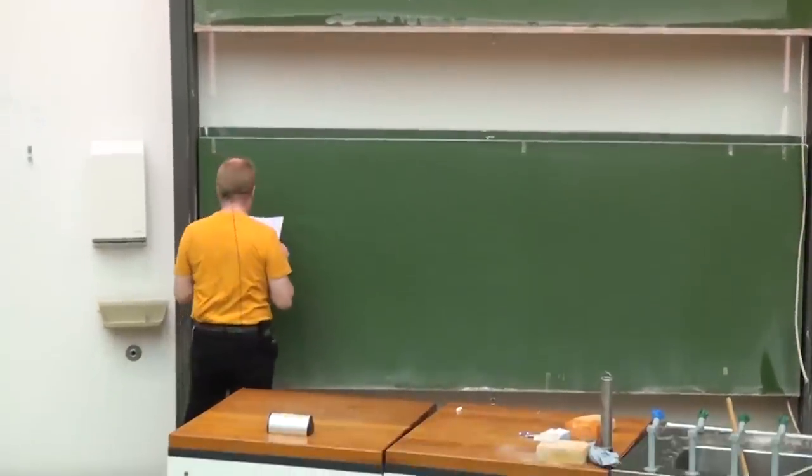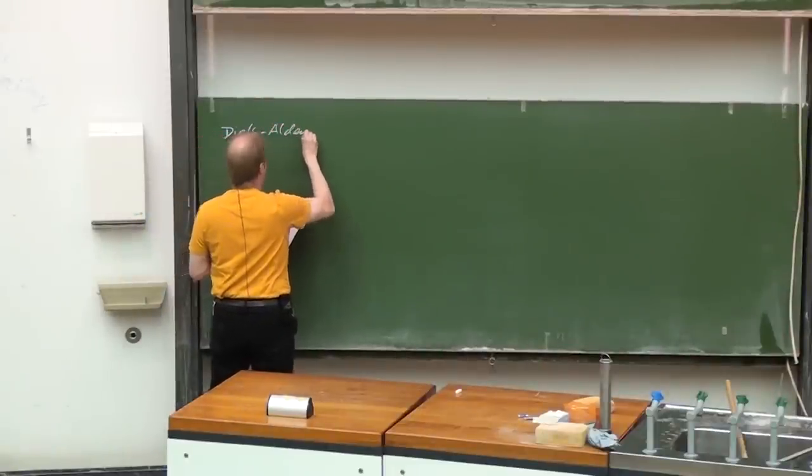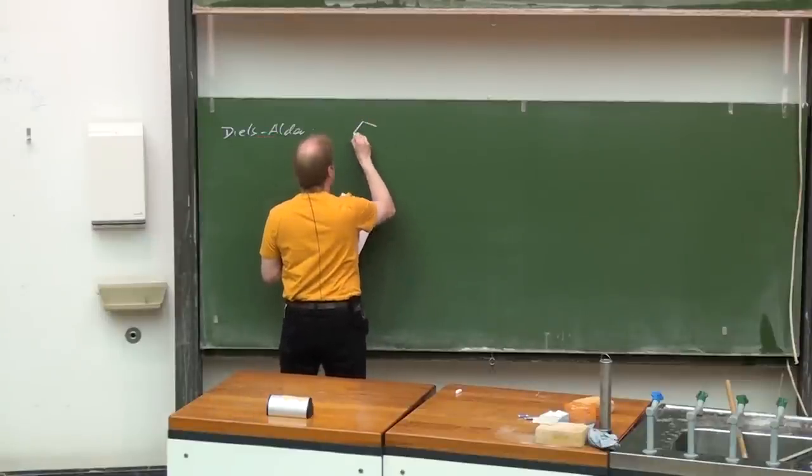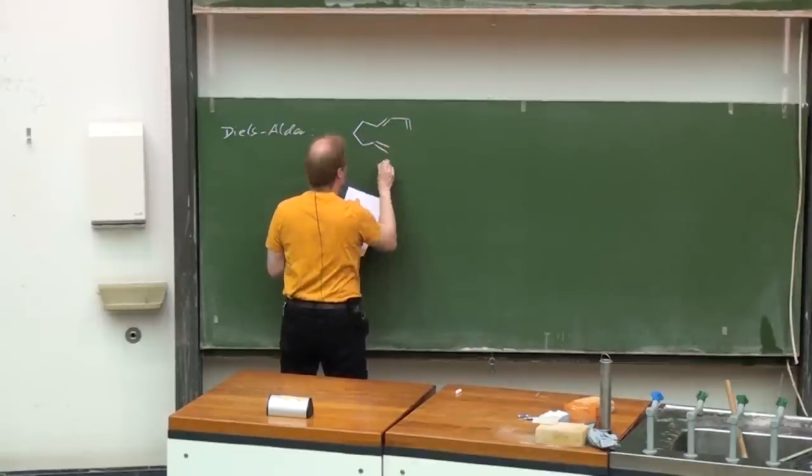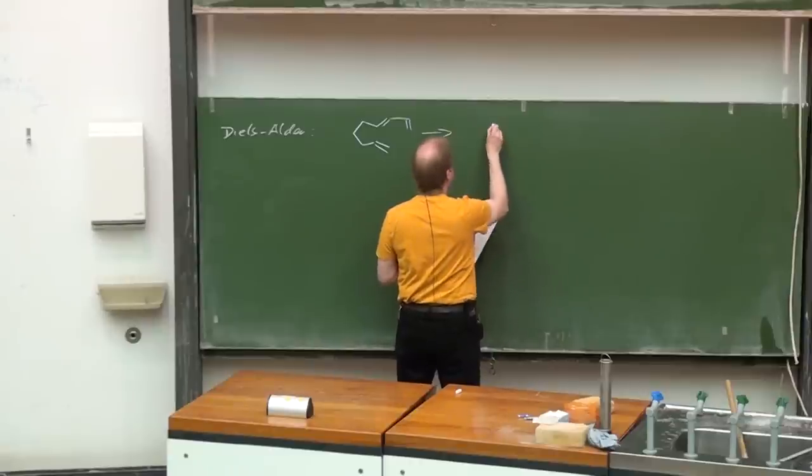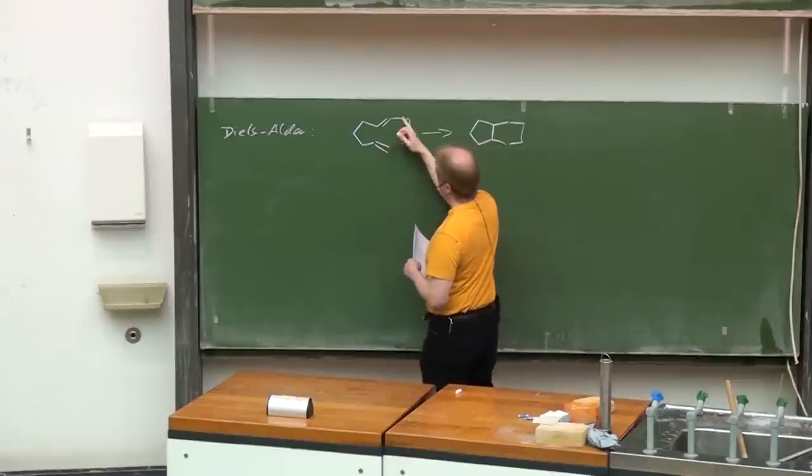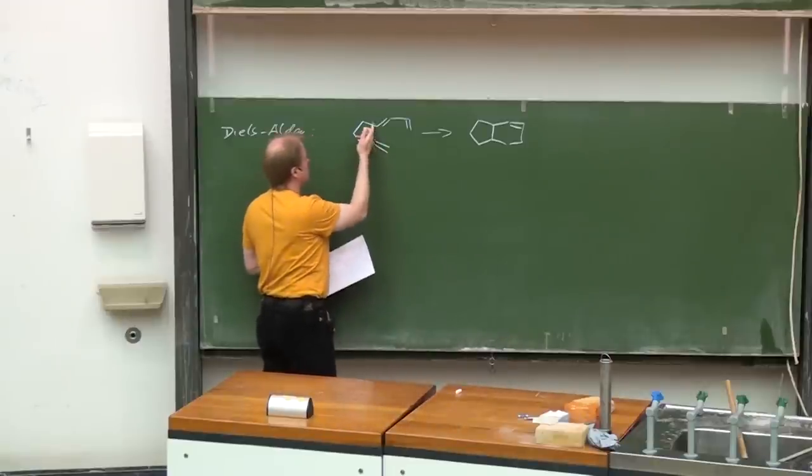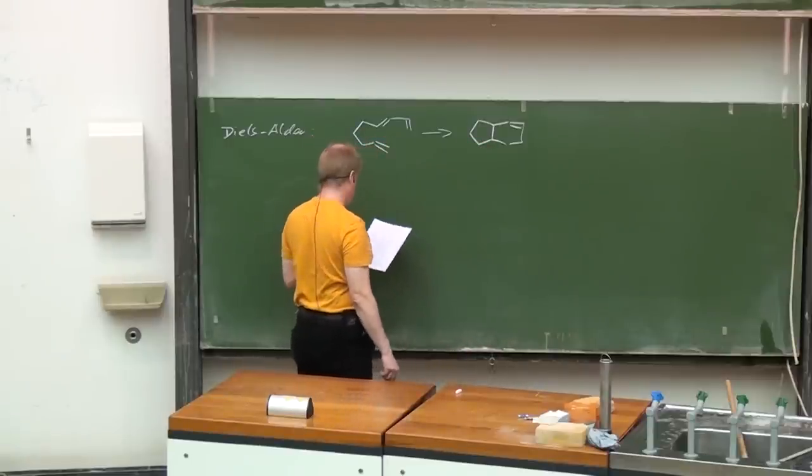For instance, the Diels-Alder reaction. An intramolecular Diels-Alder reaction with a similar framework would look like this. In the Diels-Alder reaction we form a cyclohexene moiety, and here since a tether connects the diene and the dienophile, an annelated ring system would be the result.